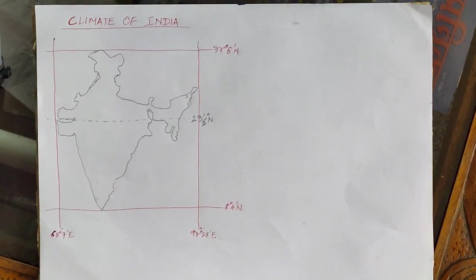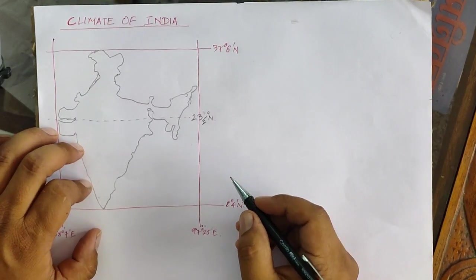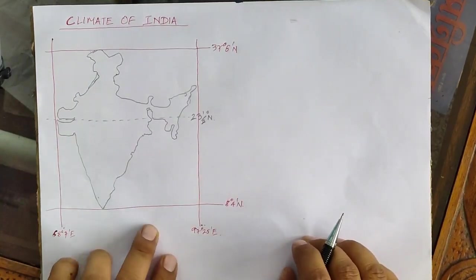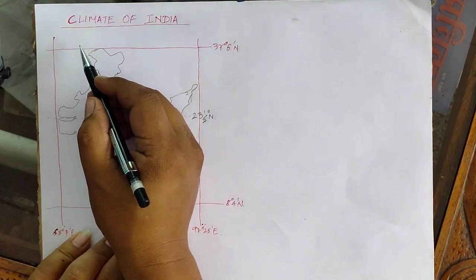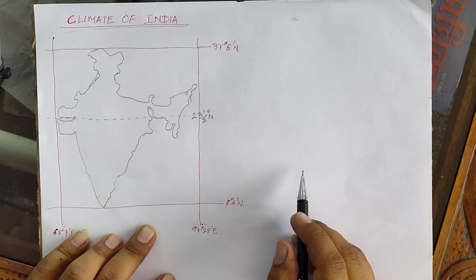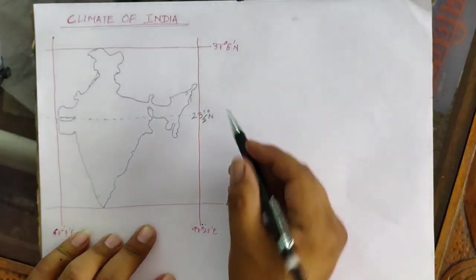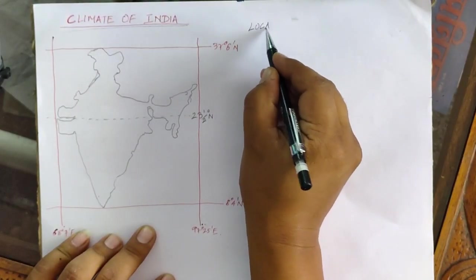Good morning everyone. Today we are going to discuss the climate of our country. This is the fourth chapter, so let us start with the climate of India. Mainly, the location of our country plays a vital role in shaping the climatic conditions.